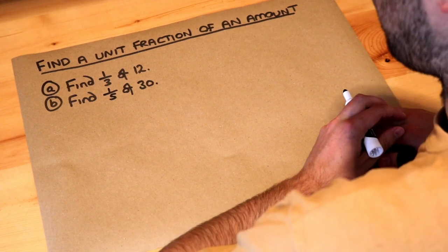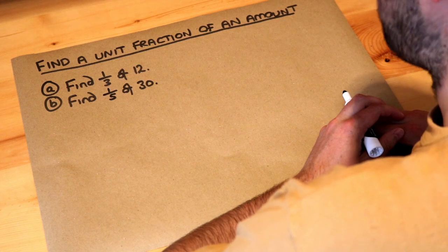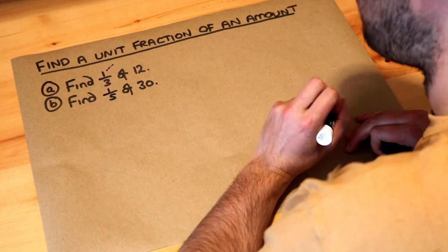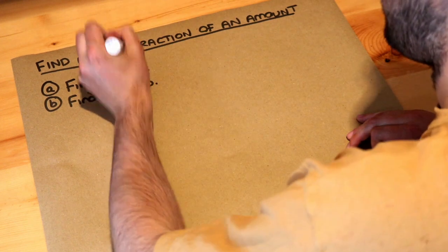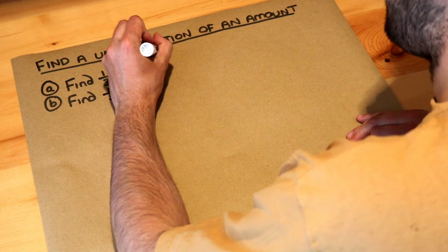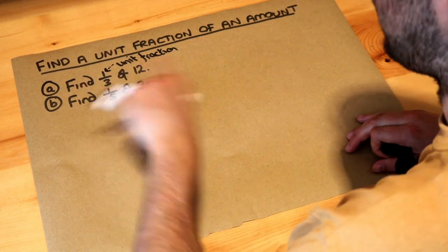Hello and welcome to this Dr. Frost video on finding a unit fraction of an amount. By a unit fraction, I just mean the numerator, the number at the top of the fraction, is one. So this is a unit fraction because the top number, the numerator, is one, and that's one as well, so that's a unit fraction too.